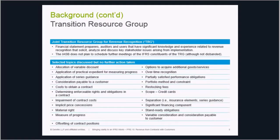Subsequent to issuance of the new standard, the IASB and FASB jointly established the TRG. Although non-authoritative and not issuing guidance, TRG members share their views on issues raised by stakeholders as they work through implementation. The TRG may make recommendations to the Board to further discuss specific implementation issues, which occurred as demonstrated by the recently issued amendments. Up to end of 2015, the TRG discussed approximately 48 papers in their joint meetings, the majority of which were determined to be sufficiently addressed by existing requirements.